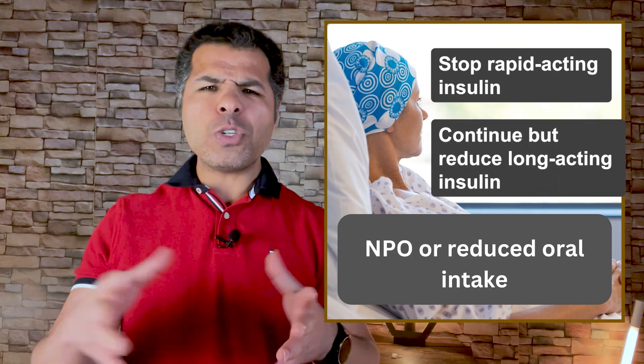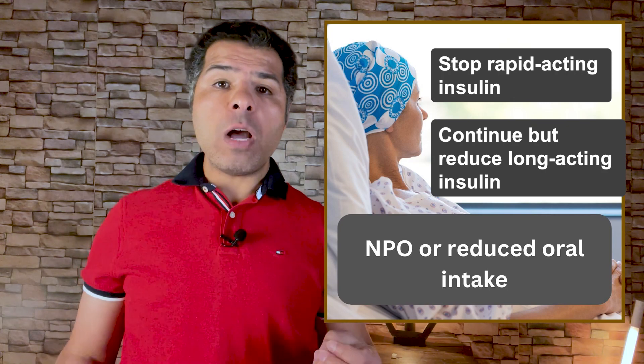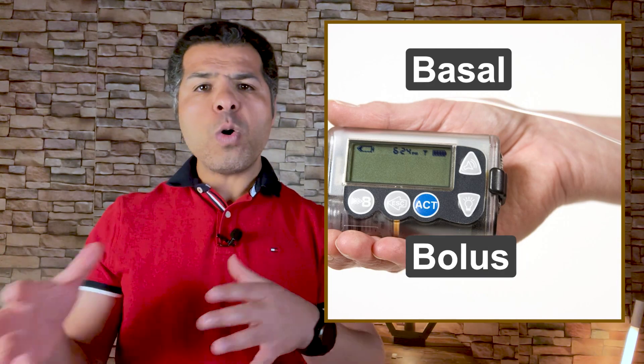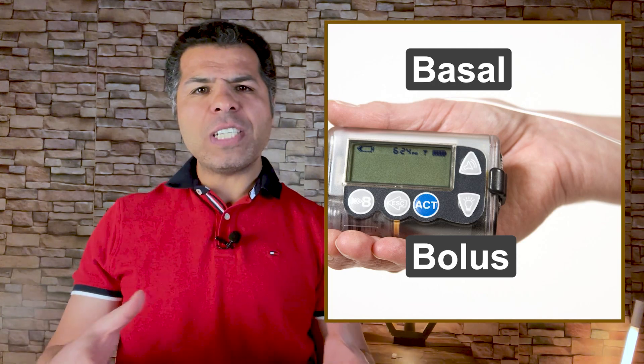For patients on an insulin pump: pumps use rapid-acting insulin delivered in two ways — a continuous basal infusion rate throughout 24 hours, and bolus doses the user instructs the pump to give based on carb counts or high blood sugar readings. The basal infusion rate is handled similarly to long-acting insulin and should be resumed at a reduced dose for patients who are NPO or with decreased oral intake. Bolus doses should be discontinued, similar to pre-meal insulin.